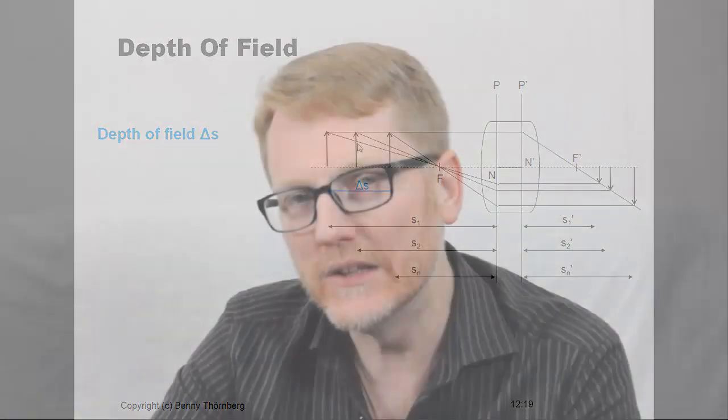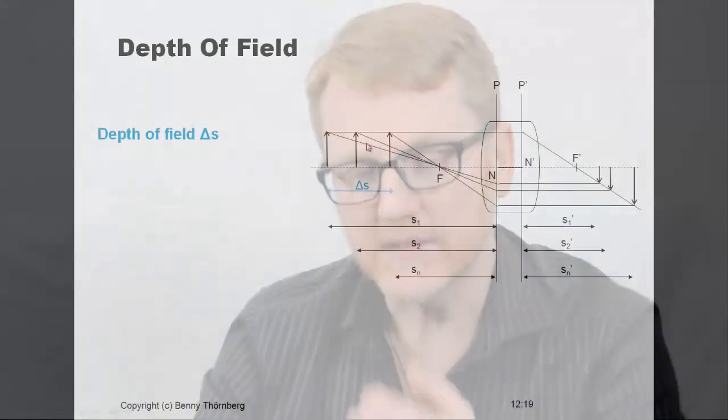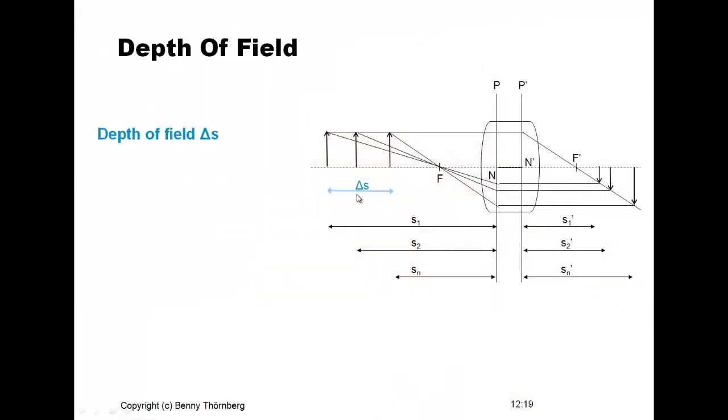In real life, all the objects you want to image are not located at the same distance in front of the camera — they will be at different distances. The question is: how large a variation in distance in front of the camera can you accept and still consider the objects to be in reasonable focus? This variation in distance, delta S, is what we define as the depth of field.